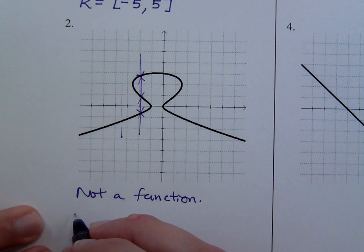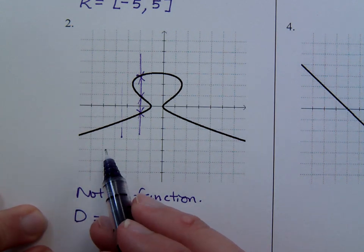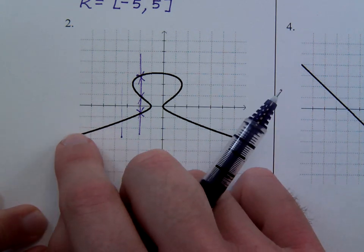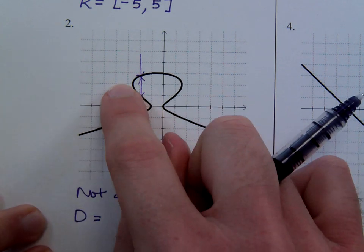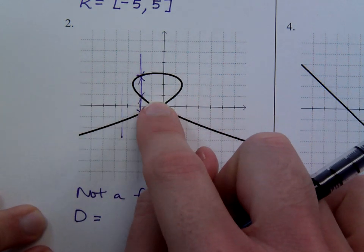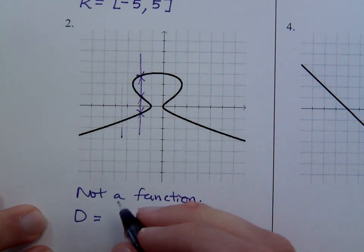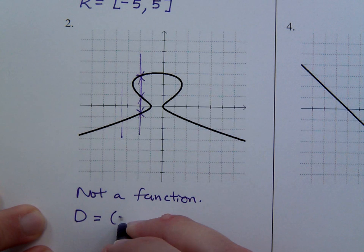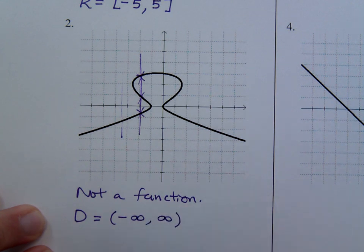What about the domain? Well, as I go from left to right, it goes all the way from negative infinity. It bounces a little bit, but it goes all the way out to the right without breaking. So this is from negative infinity to positive infinity — all real numbers.